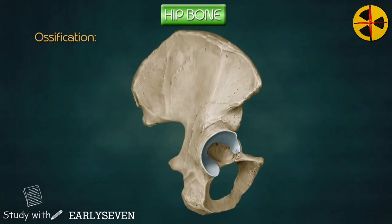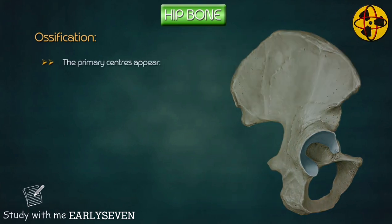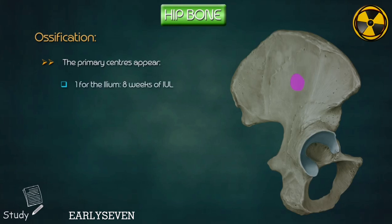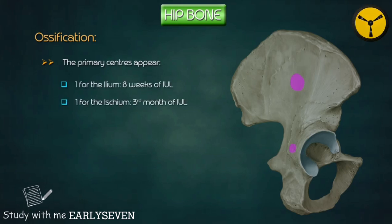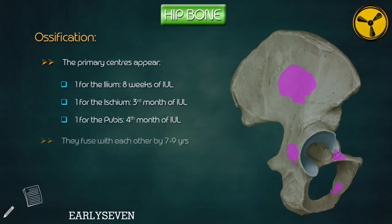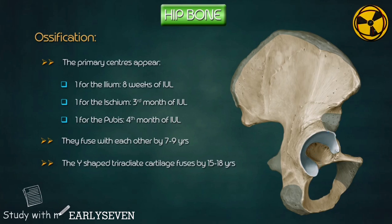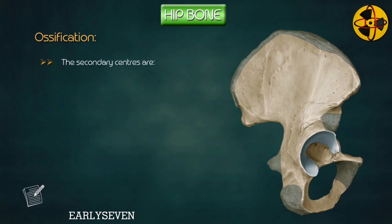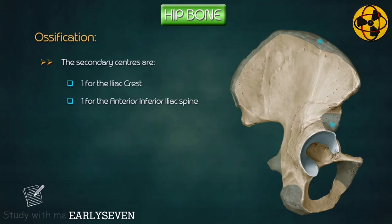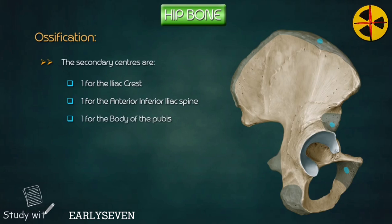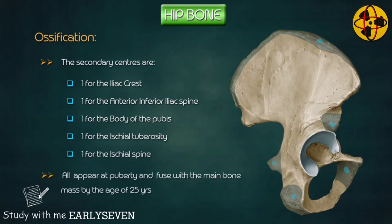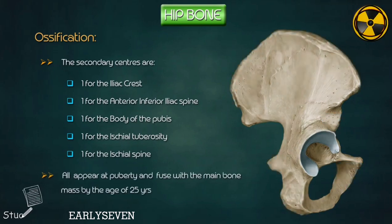Ossification. The hip bone ossifies in three primary centers and five secondary centers. The primary centers appear as follows: one for the ilium at eight weeks of intrauterine life; one for the ischium at the third month; one for the pubis during the fourth month. They fuse with each other by seven to nine years. The Y-shaped tri-radiate cartilage fuses by 15 to 18 years. The secondary centers are: one for the iliac crest, one for the anterior inferior iliac spine, one for the body of the pubis, one for the ischial tuberosity, and one for the ischial spine — all appearing at puberty and fusing with the main bone mass by the age of 25 years.